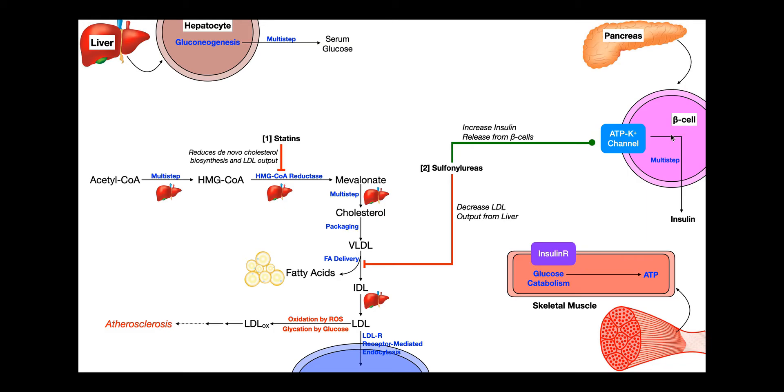It turns out that in order for the beta cell to make insulin, it's dependent somewhere in its pathway on this ATP-dependent potassium channel. So if you want more insulin, simply further activate this channel. It turns out that sulfonylureas activate this channel, the ATP-dependent potassium channel, which leads to more insulin release. The other thing that sulfonylureas do is they go to the liver and decrease LDL output. If there's less LDL output, then there's less of a chance for it to get oxidized in the intima by reactive oxidative species and glucose. And so that theoretically will also decrease the risk of atherosclerosis.